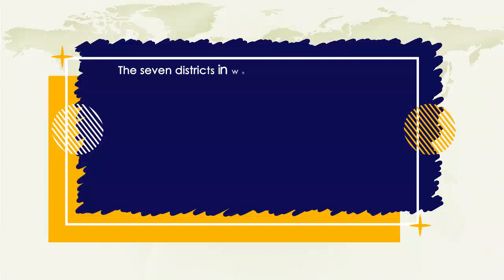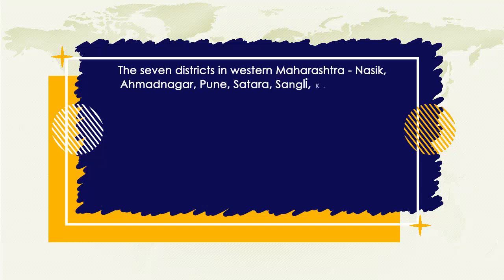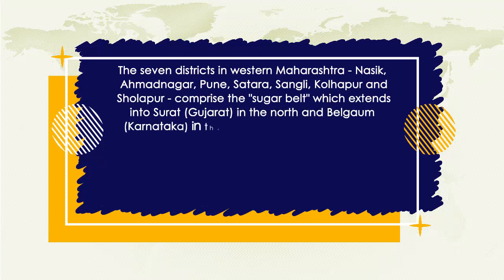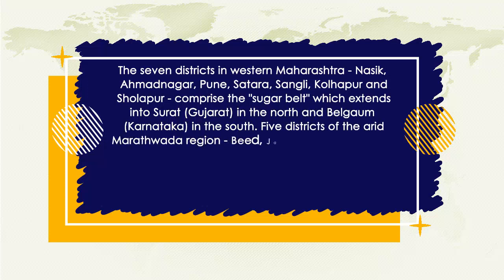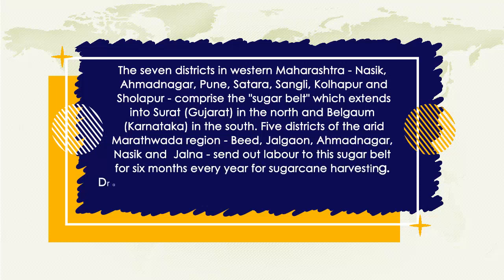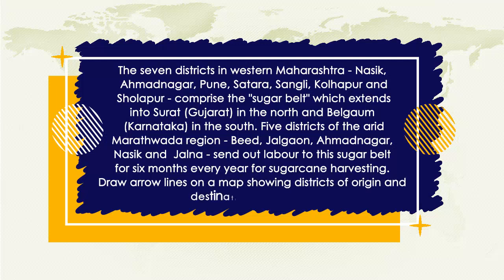The seven districts in western Maharashtra — Nasik, Ahmednagar, Pune, Satara, Sangli, Kolhapur and Sholapur — comprise the Sugar Belt, which extends into Surat in the north and Belgaum in the south. Five districts of the arid Marathwada region — Bid, Jalgaon, Ahmednagar, Nasik and Jalna — send out labour to migrant destinations for six months every year for sugarcane harvesting.